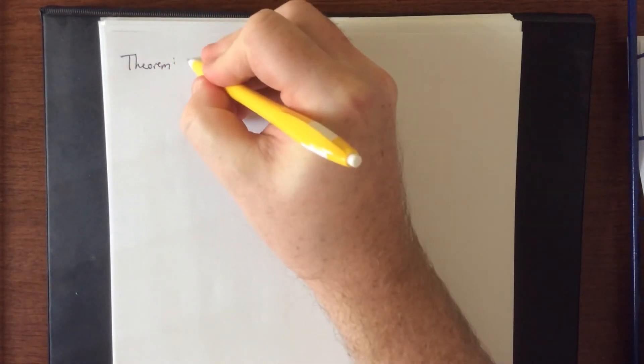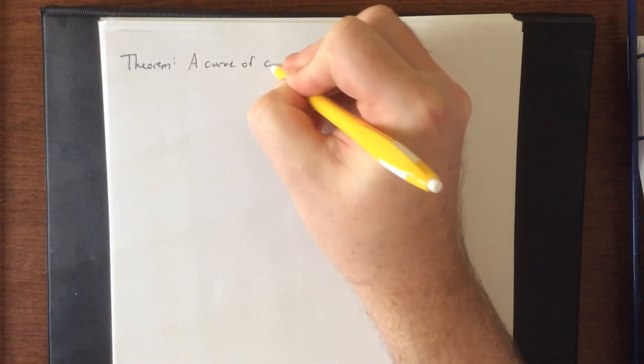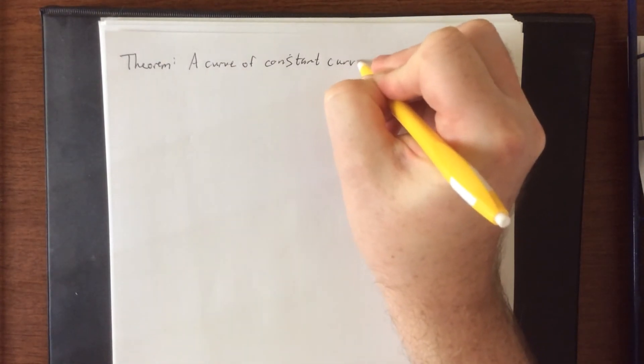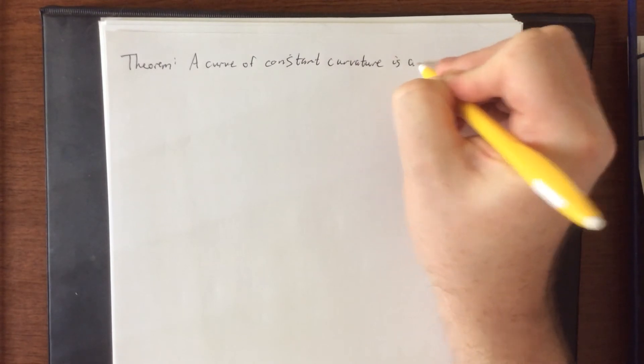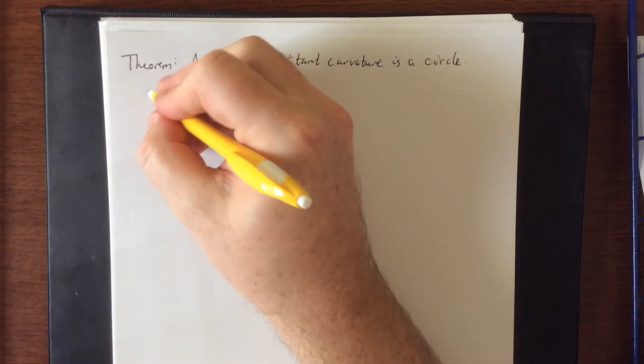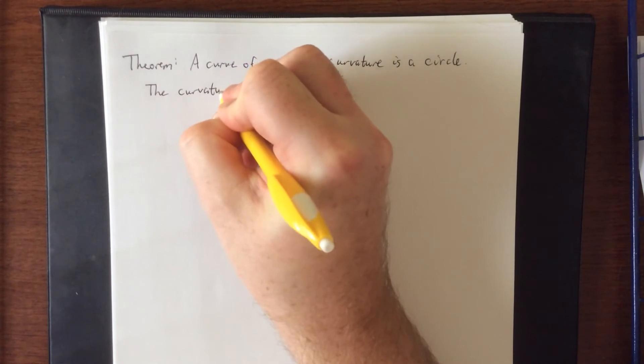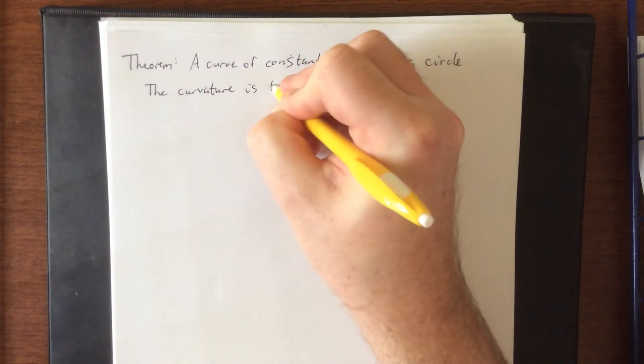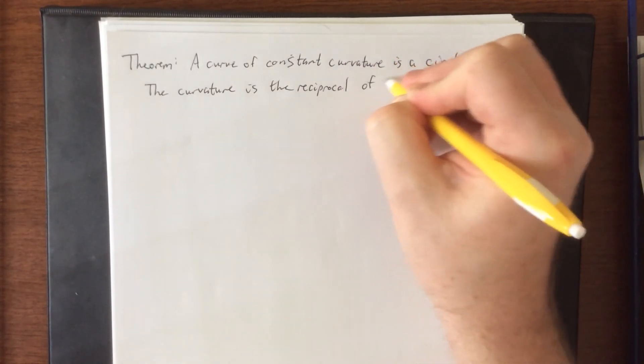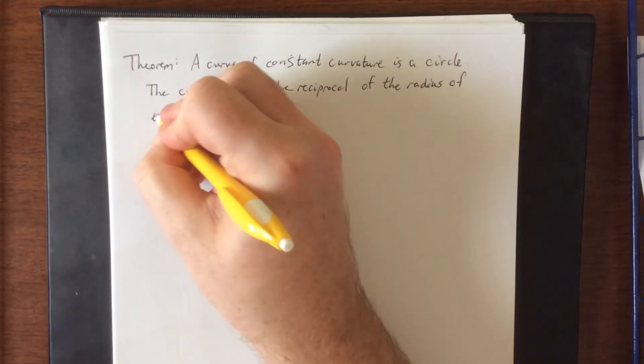This theorem is: a curve of constant curvature is a circle. Moreover, the curvature is the reciprocal of the radius of the circle.